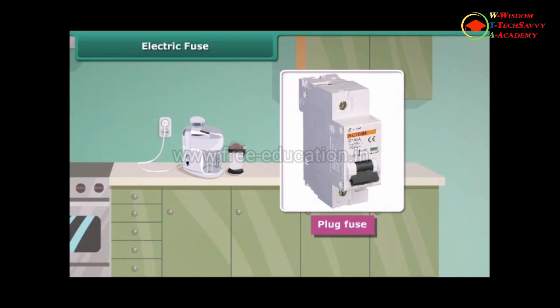Plug fuse is used in our houses. The plug fuse consists of two parts: the porcelain casing and the porcelain grip. This fuse has a thin wire of tin and lead alloy which has low melting point. Cartridge fuse is generally used in electrical appliances.